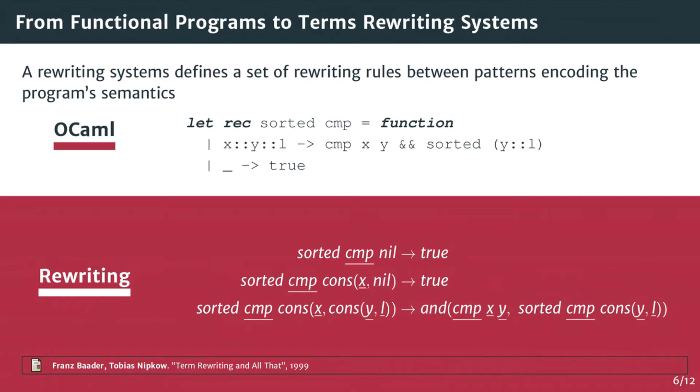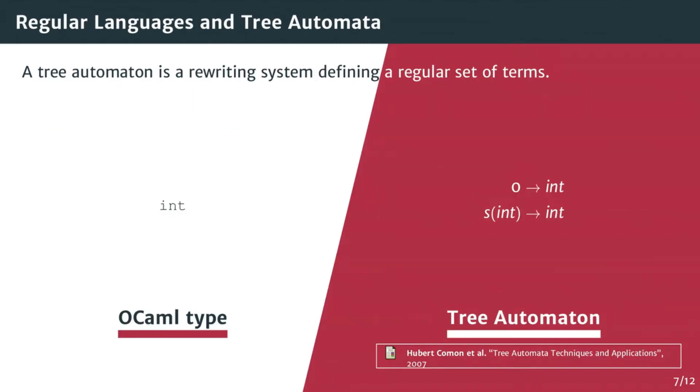A rewriting system can also be used to describe a regular language of terms as tree automata. Here is for instance on the right, the tree automaton recognizing every natural number, which can be used to partially represent the int type in OCaml. The rewriting rule defines that zero rewrites into int because it is an int, and s of int, a successor, is also an int. In fact, tree automata can model any algebraic datatype of OCaml.